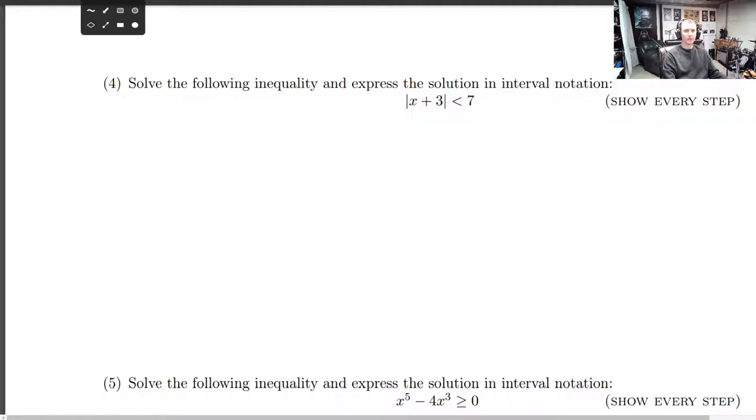All right, and we are back for another video on some mock exam solutions. In this one we'll be solving a couple of inequalities, one with an absolute value and one with what looks like a quintic, so buckle in, here we go. Solve the inequality and express the solution in interval notation. X plus three under absolute values is less than seven. So we want to find every X such that when you add three to it, the size of what you get is still less than seven.